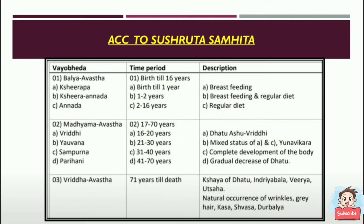The third classification is from 71 years till death, called Vidhavastha. There is depletion of Dhatu, Indriyabala, Veerya, and Utsaha. Natural occurrences include wrinkles, gray hair, Kasa, Shwasa, and Durbalya — all previously developed bodily functions begin deteriorating in this Vidhavastha age.